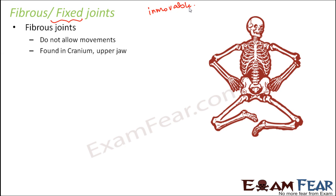This type of joint is found in the cranium and upper jaw. The cranium is part of the skull. Inside our skull we have a lot of joints — many bones are connected to each other. But those joints do not allow movement. That is why our skull does not have the flexibility to move; it cannot bend or rotate.